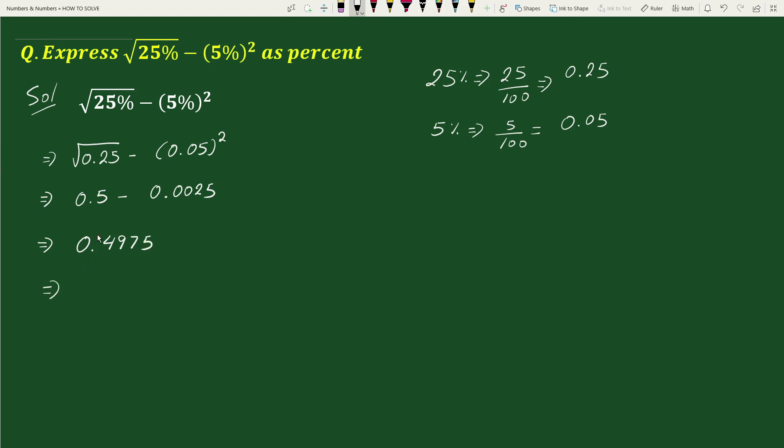Now to change a decimal to percent we multiply the decimal by 100. So 0.4975 times 100 equals to 49.75 percent.